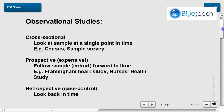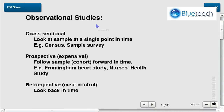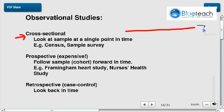Observational studies can be cross-sectional — they look at a sample at a single point in time. For example, you're making a survey right now at one specific moment.